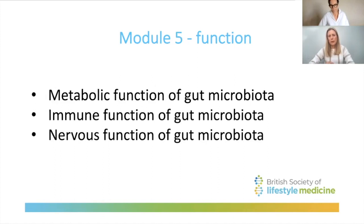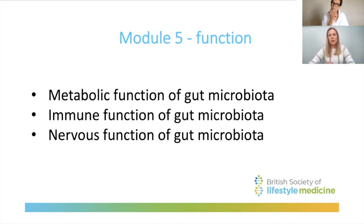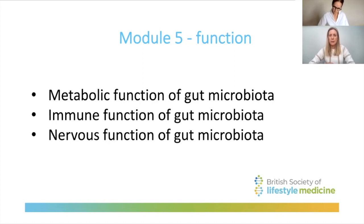Module five looks at how these microorganisms function — what they actually do within our bodies. We take a deeper look at three main areas: the metabolic function, the immune function, and the nervous function. These areas are massive, and the influence that gut microbiota have on us is huge. This is a really fundamental area of microbiome science and gives enormous clues about how these microbes link with us, our health, and the relationship between our microbes and disease.